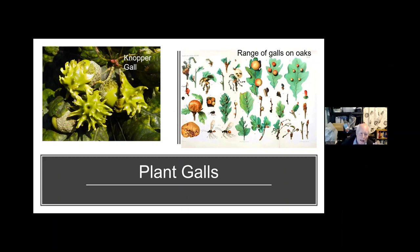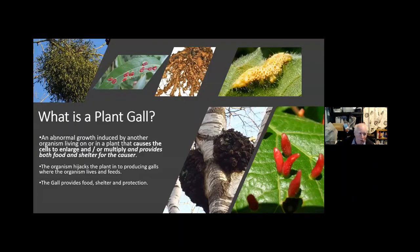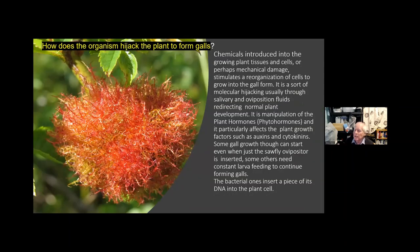So what really is a plant gall? Well, it's an abnormal growth induced by another organism that lives either on or in the plant, and it causes the cells to enlarge and/or multiply. What the organism wants is the provision of both food and shelter — it's hijacking the plant to produce galls where it can live, feed, and be relatively safe.